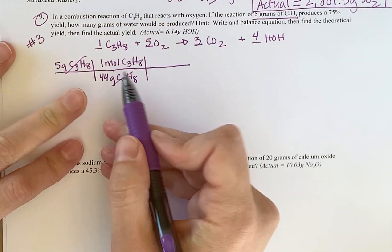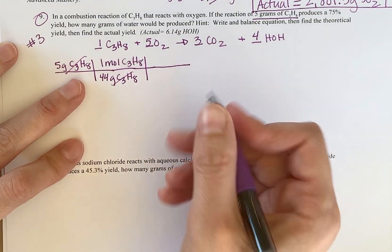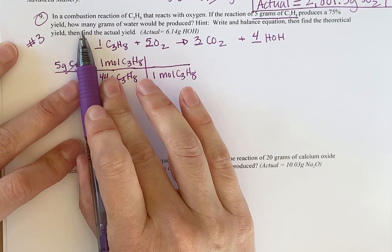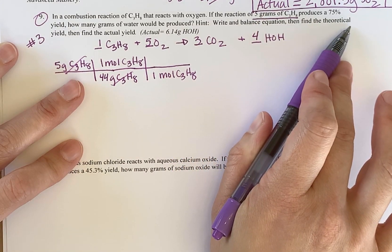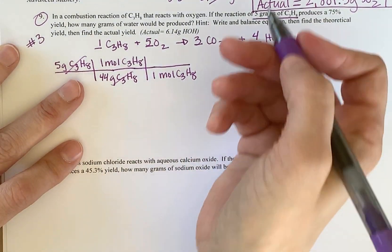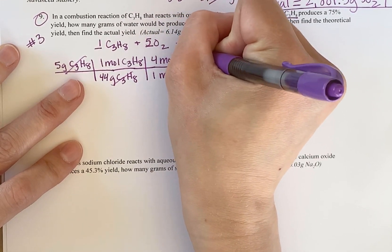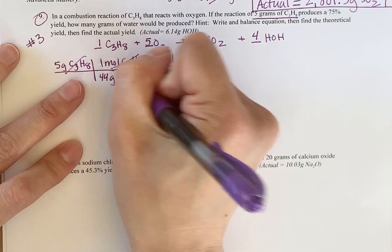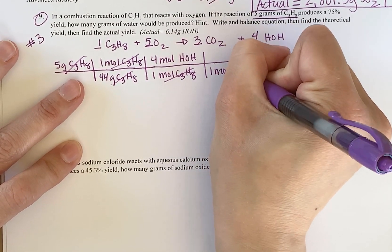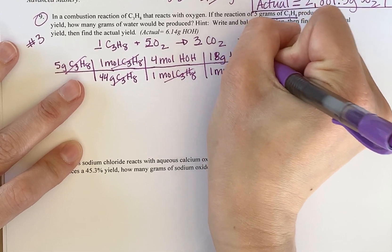Grams cancel. Mole ratio for my balanced chemical equation to change it. So here's one mole for my balanced equation. And the problem says it produces a yield of 75%. How many grams of water would be produced? So that means I'm going to change it into water. And I have four moles of water. So these cancel. I'm going to change my moles to grams. One mole of water has a molar mass of 18 grams of HOH.